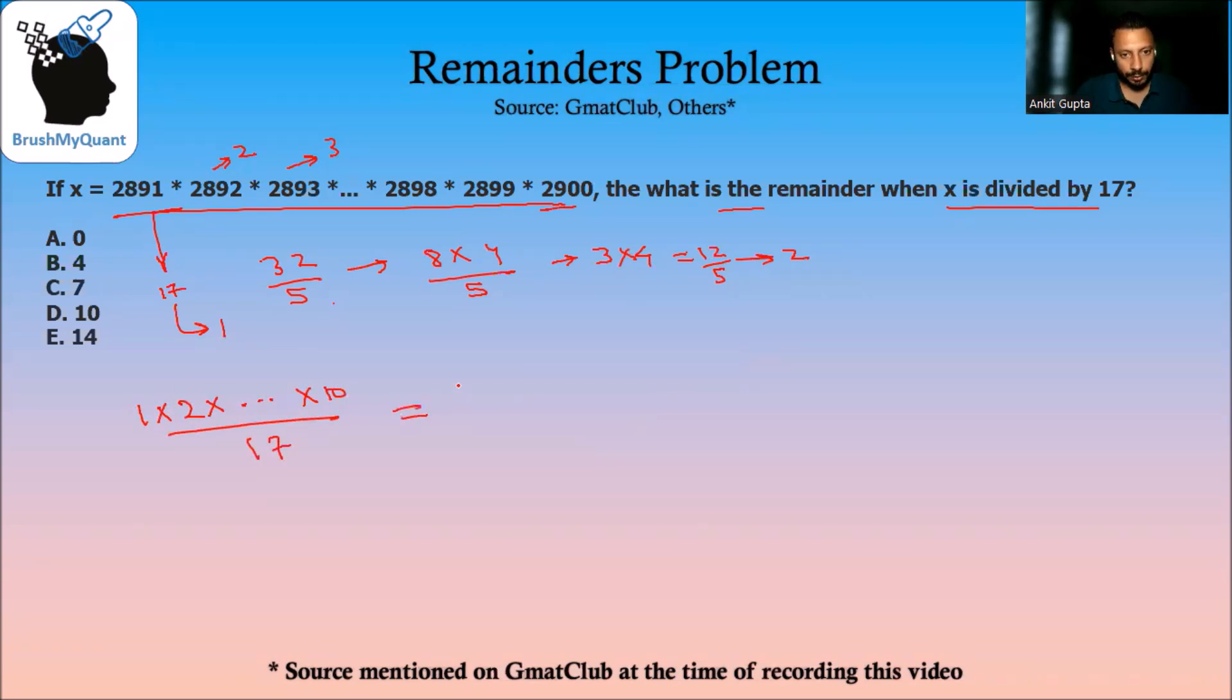Let's break this into smaller numbers. 1 into 2 into 3 into 4 into 5 divided by 17, multiplied by 6 into 7 into 8 by 17, multiplied by 9 into 10 by 17.